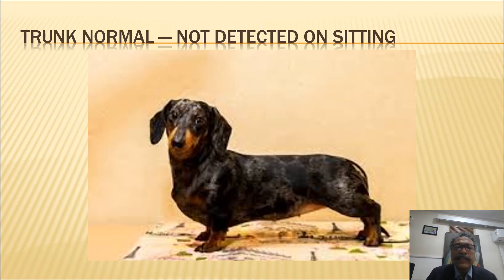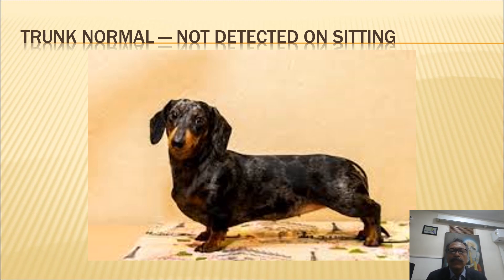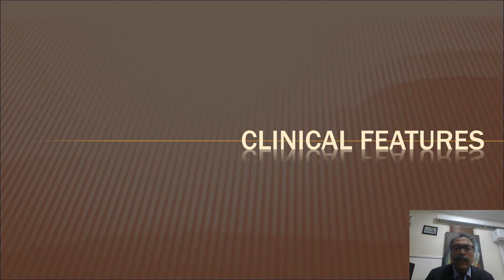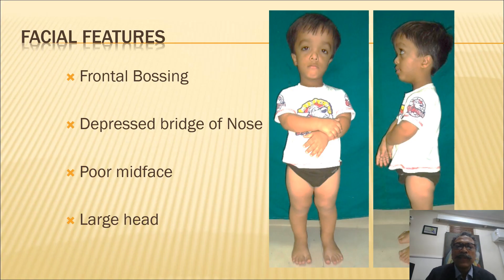Achondroplastic dwarfism is akin to the problems faced by dachshund dogs, in which their length when sitting upright is normal but the anteroposterior diameter of the spine is reduced. The clinical features of achondroplasia are well known and not easy to miss.